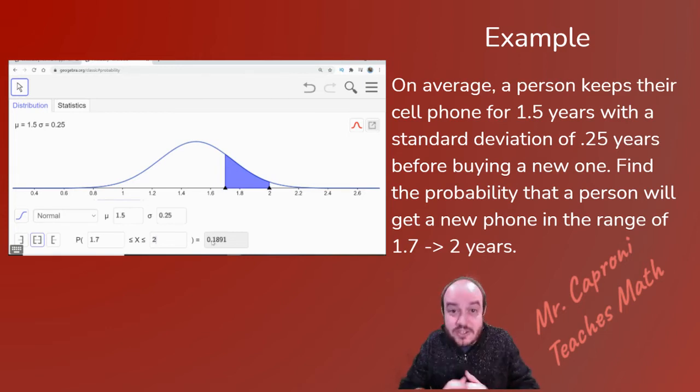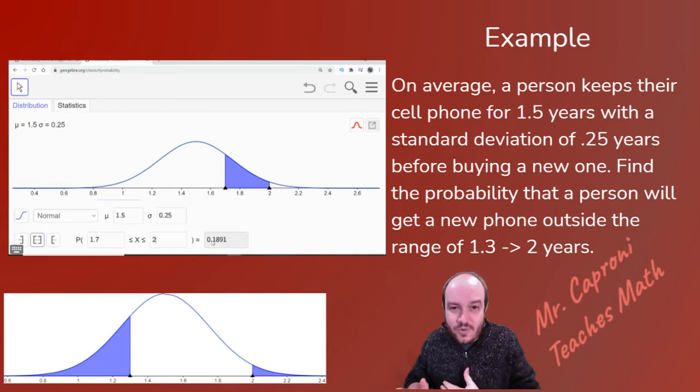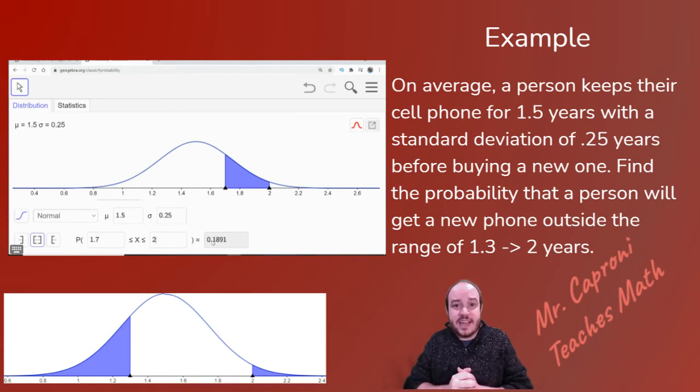Now, there is one challenging question that goes along with this type. And that's the next one we're going to look at. Now, if you notice, this one says outside the range of 1.3 and 2. Now, the problem is GeoGebra doesn't do outside of a range. So I have that picture here for us to see what that would look like to shade both the left and right side. There's actually two ways you could handle this.